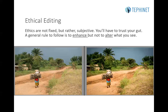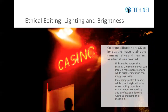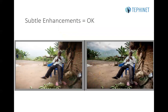A general rule of thumb is that anything you can do in a darkroom, you can do in editing — changing the contrast, deepening the blacks, heightening the whites, adding a vignette, and the like. But it does not mean doing things that Photoshop or Photoshop-like programs are skilled at in terms of removing elements. Color modifications — deepening blacks, brightening whites, adding saturation — are okay so long as the image retains the same narrative and meaning as when it was created. Be aware that making a scene darker can imply a more negative tone, while brightening it up can imply positivity. Increasing contrast, blacks, whites, and slight vibrancy or correcting color tends to make images compelling and professional-looking without changing their meaning.